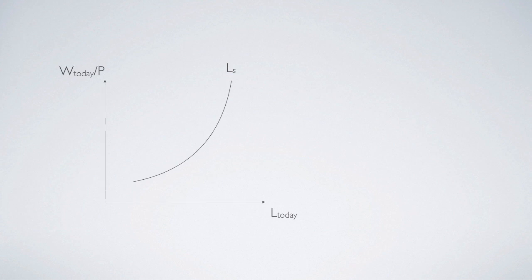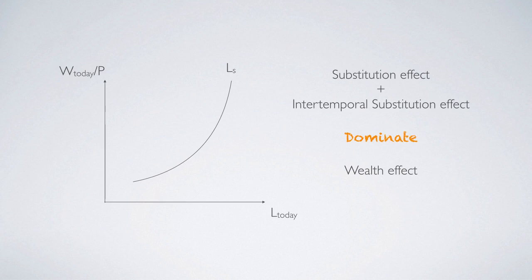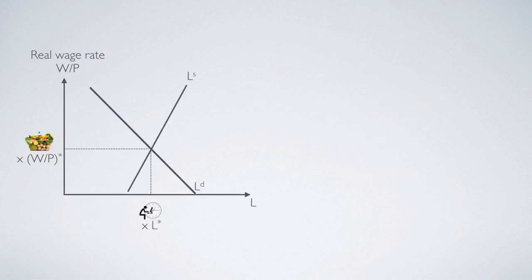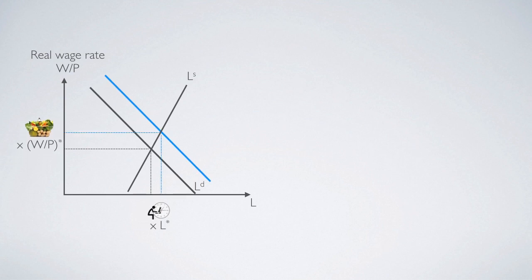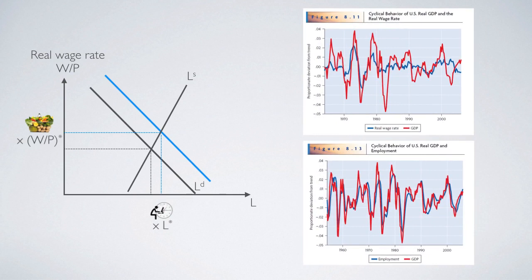Up to this point, we learned that if we draw a positive slope labor supply curve, we always have to bear in mind that it implies — for this household or for the economy — we are assuming that the substitution effect together with the intertemporal substitution effect actually dominates the wealth effect. It is because of this assumption, which is actually an observation from data, that we are able to draw a positive labor supply curve. With a positive labor supply curve, when there is a good shock that increases firm's labor demand and output, we will see equilibrium wage rate and employment level increase together, explaining why real wage rate and employment are procyclical.